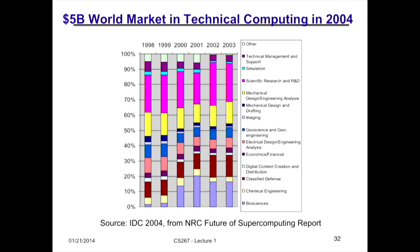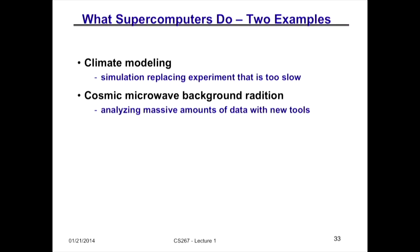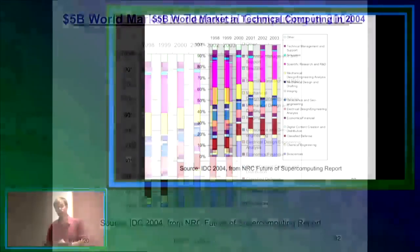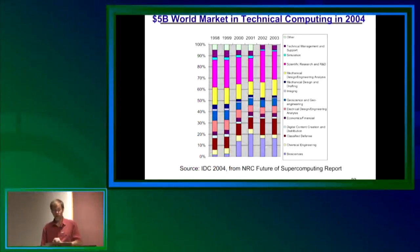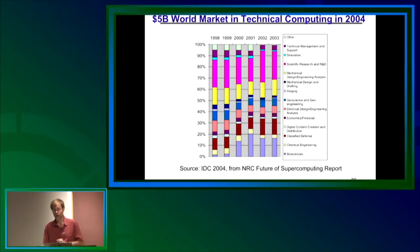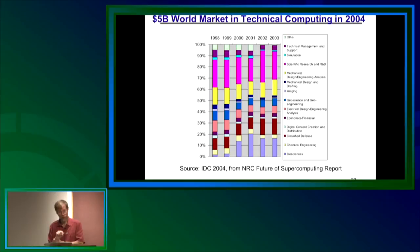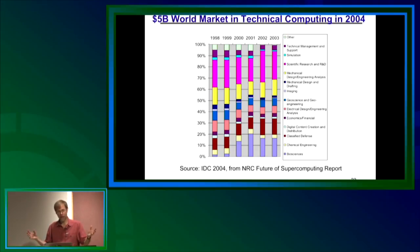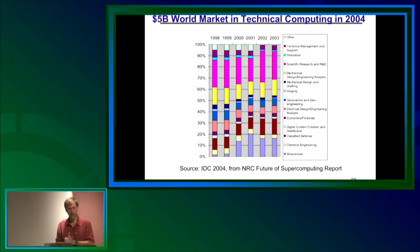That data comes from IDC — the International Data Corporation — who survey companies on how they spend their IT budgets. It's hard to get the data so this only goes to 2004, but it shows what fraction of high-performance computing is done for R&D, mechanical design, biosciences, chemical engineering, and classified defense across different industries. One interesting class project from a student who is now a professor at MIT's Sloan School looked at different industries to ask whether their simulation software was ready to go parallel and how that would affect their market competitiveness.